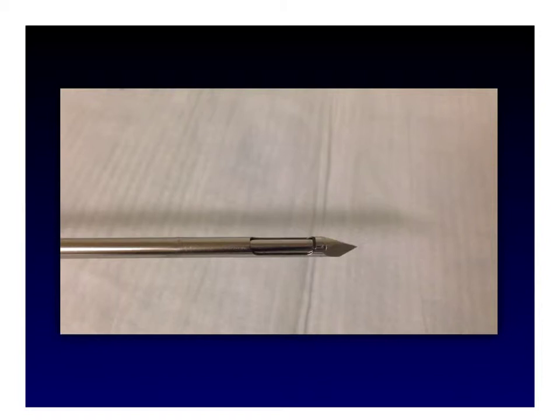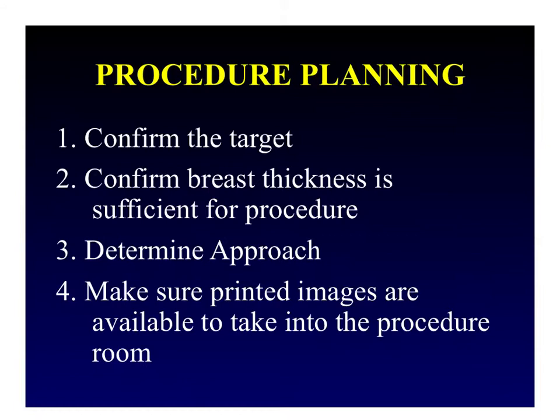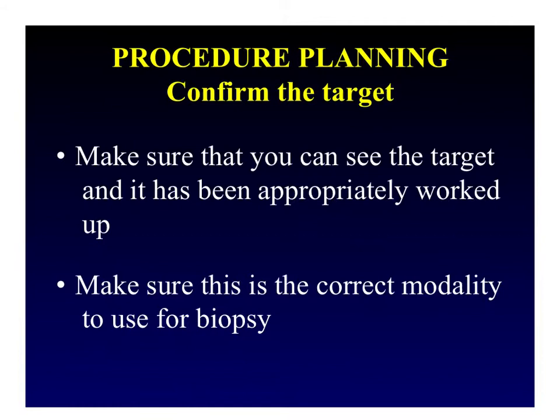There are four primary steps when planning these procedures. Number one, confirm the target. Number two, confirm that breast thickness is sufficient for the procedure. Number three, determine your approach. And number four, make sure printed images are available to take into the procedure room. To confirm the target, make sure you can see it on your diagnostic views, that it has been appropriately worked up, and that this is the correct modality to use for biopsy.